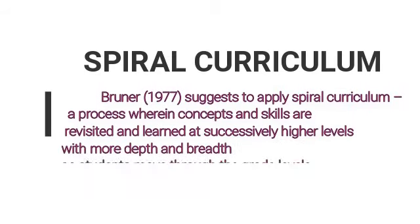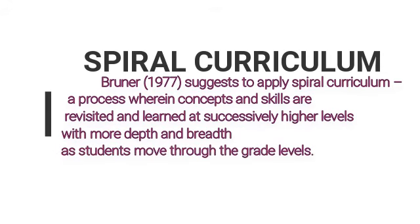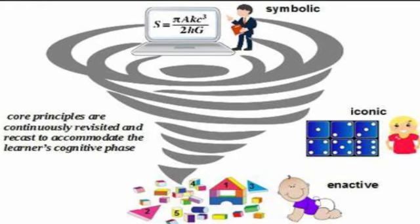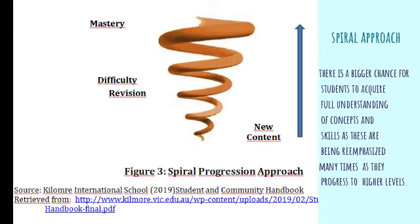As the modes of representation imply, the teacher needs to consider the learner's thinking and capacity. This tells us the lesson must be introduced in a way that is neither too easy for learners to understand nor too hard for them to solve. Thus, Bruner in 1977 suggests to apply a Spiral Curriculum, a process wherein concepts and skills are revisited and learned at successively higher levels with more depth and breadth as students move through the grade levels. In the Spiral Approach, there is a bigger chance for students to acquire full understanding of concepts and skills as these are re-emphasized many times as they progress to higher levels.